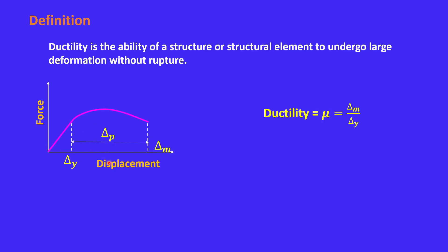Here we have shown a force-displacement curve. In the beginning the curve is a straight line, then yielding starts and the response becomes non-linear, and finally it ruptures. The displacement at which yielding occurs is the yield displacement delta-y, and the displacement at rupture is the maximum or ultimate displacement delta-u or delta-m. The plastic displacement delta-p lies between delta-y and delta-m. An expression for ductility is mu equal to delta-m divided by delta-y, also called the ductility index mu.